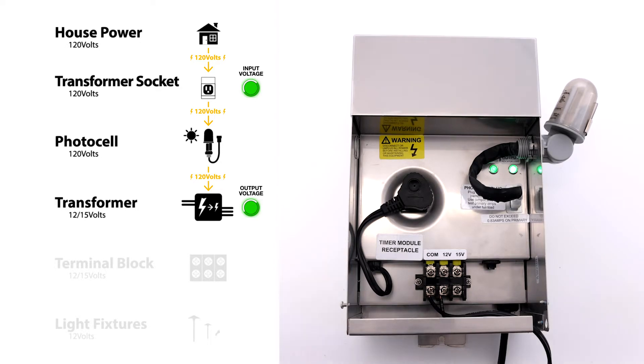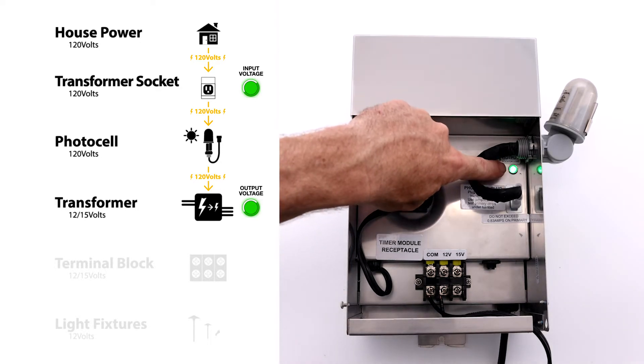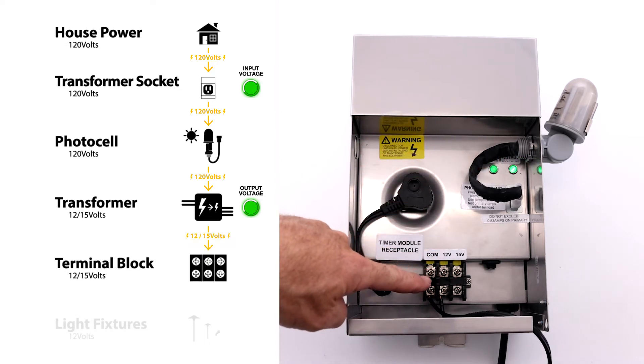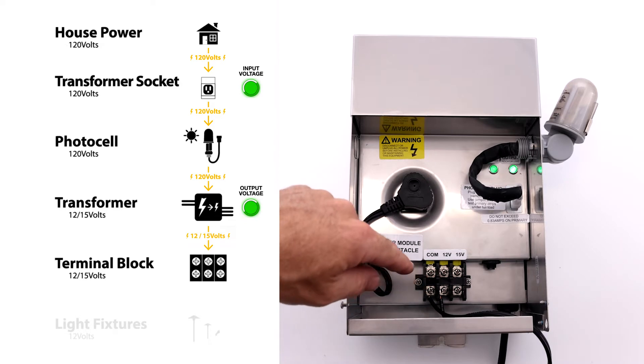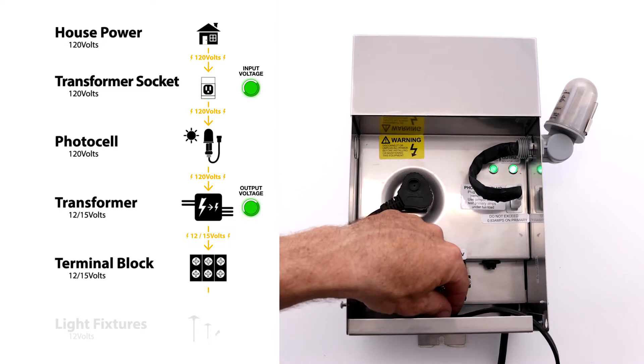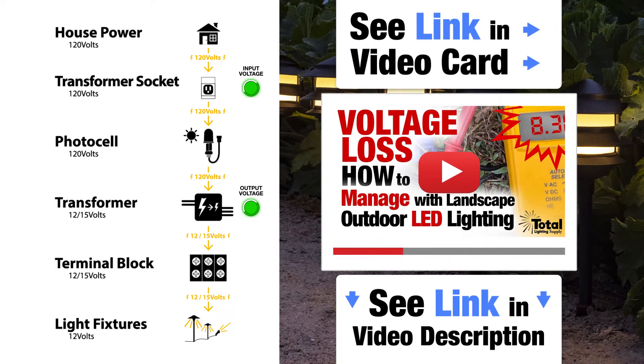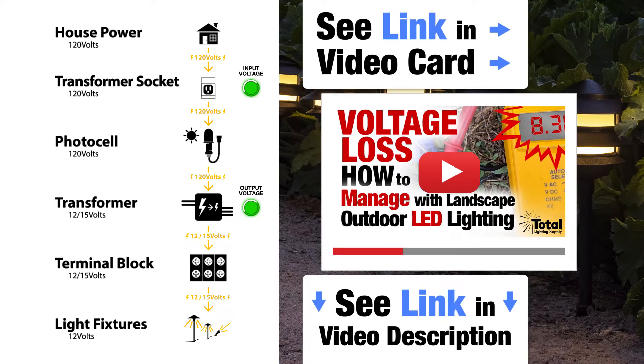When this happens, the second indicator light comes on. The new 12 and 15 volt power then goes to the terminal block where you attach your load wires going out to your landscape lighting fixtures. See our separate video on how and when to use the 15 volts.